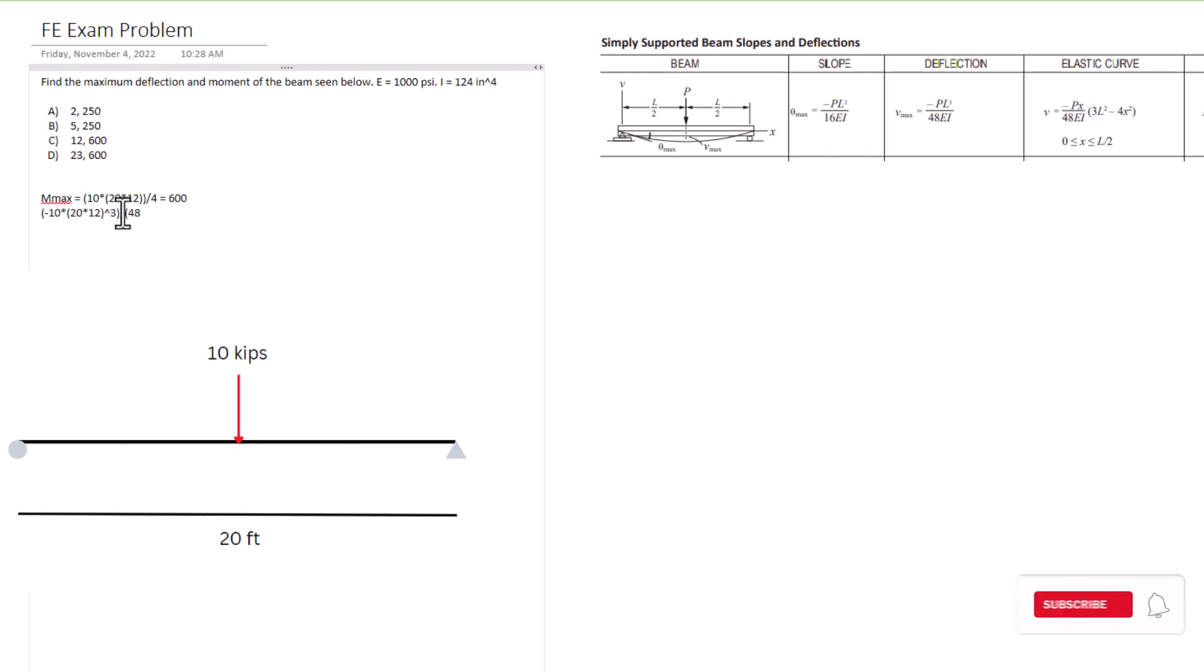So 48 times E, which is 1000, times I, which is 124, and that gives us negative 23.2258 inches is how much it's deflecting. So it looks like the answer is D in this case.